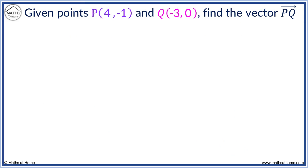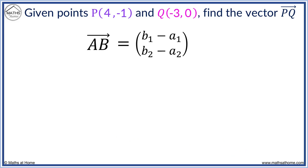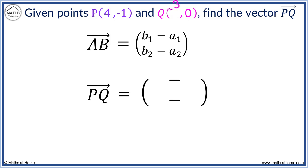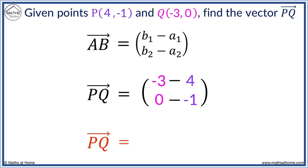Here is an example without a diagram. We use the formula as before to find vector P to Q. We subtract the initial vector from the final vector, that is, we do Q subtract P. Minus 3 minus 4 and 0 minus minus 1. Minus 3 minus 4 equals minus 7 and 0 minus minus 1 equals 1.